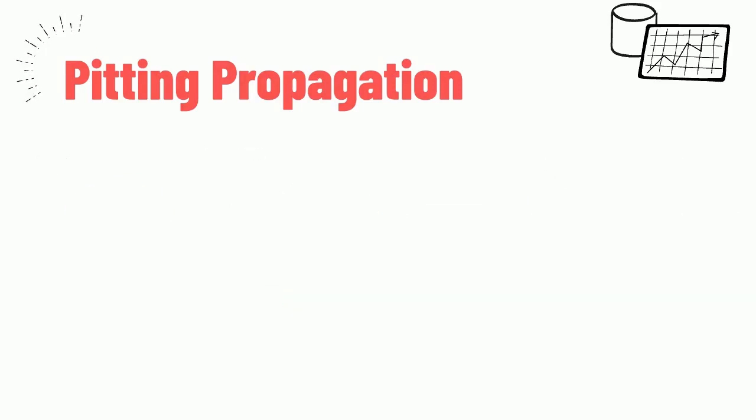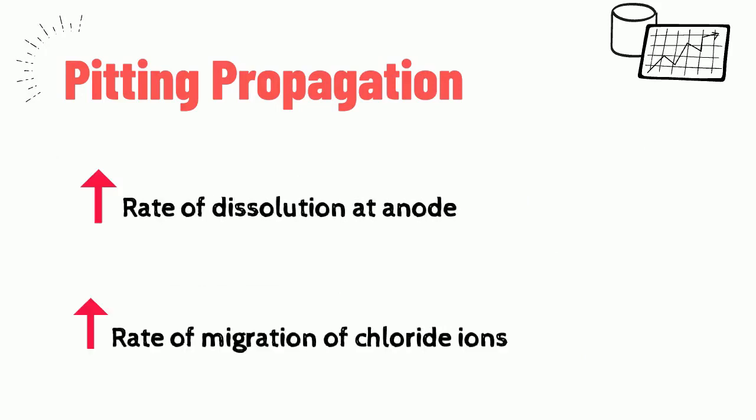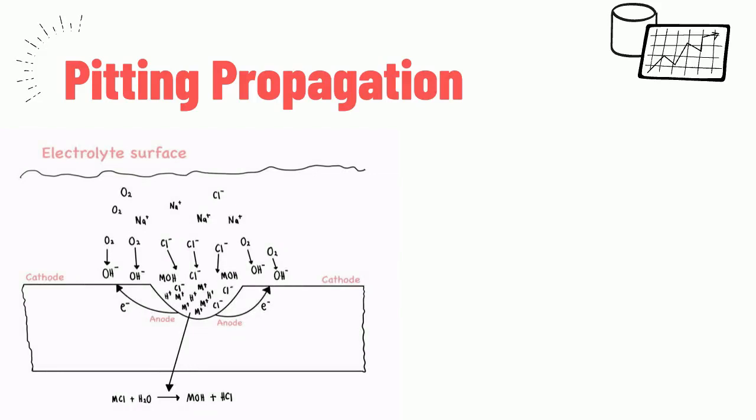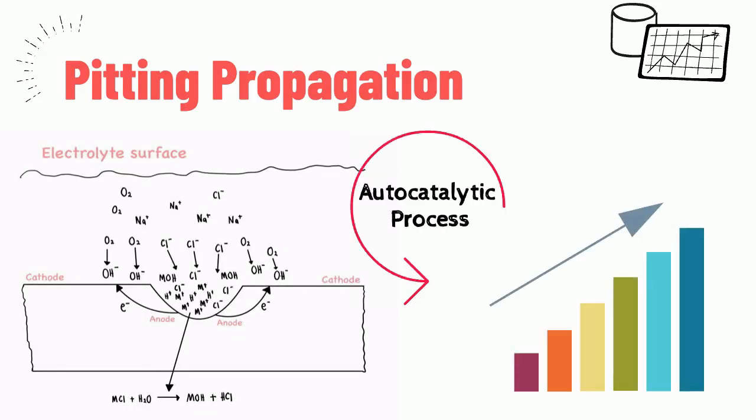The increase in the rate of dissolution at the anode increases the rate of migration of the chloride ions, resulting in the formation of more and more metal chloride by hydrolysis. The process continues until the metal is perforated by autocatalytic process and it increases with time resulting in more and more metal dissolution.